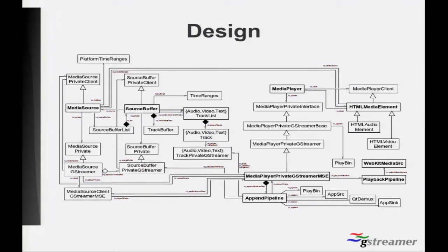Each track has a platform implementation in the form of a track driver. The MediaSource has a platform implementation, which is the MediaSourcePrivate. The SourceBuffer also has a platform implementation. What happens is that the data from the SourceBuffer relies on the platform implementation to pre-process that data. There are several auxiliary objects that perform the pre-processing, and the source buffer forwards the samples that it has found to the upper layer, so that they are available for JavaScript.